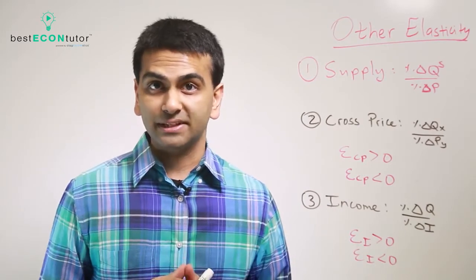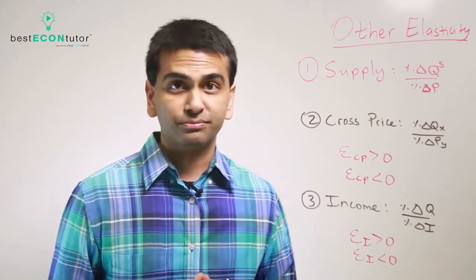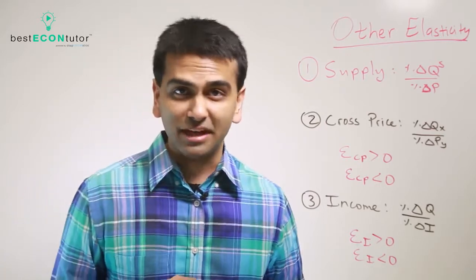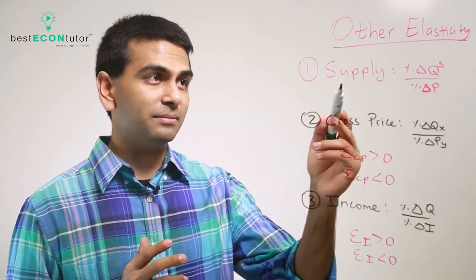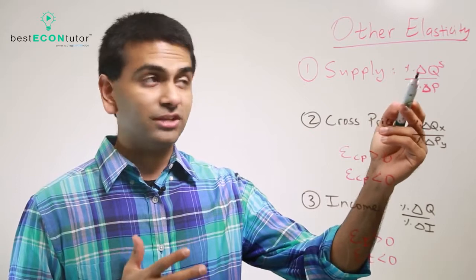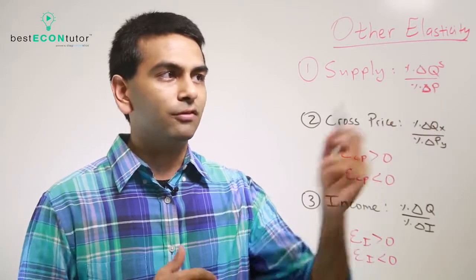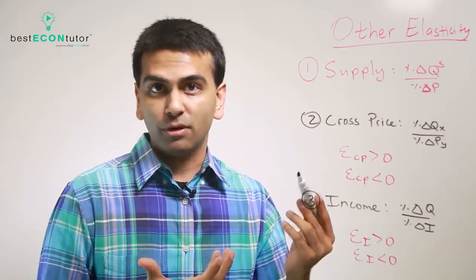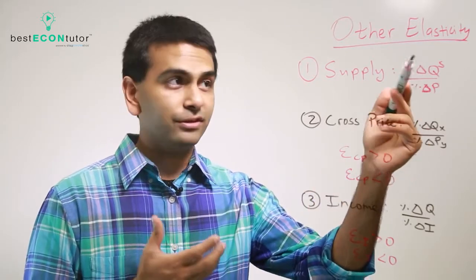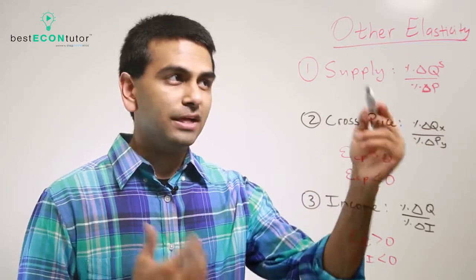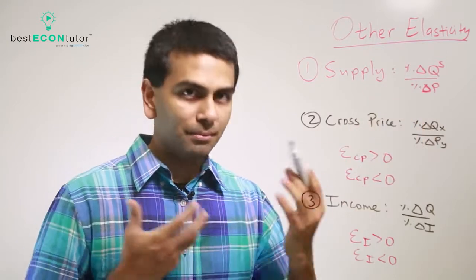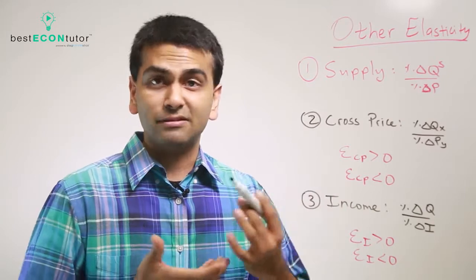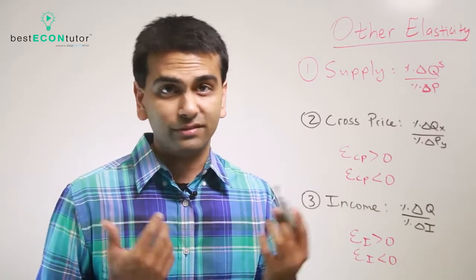Now let's look at some other types of elasticities. Elasticity of supply is calculated the exact same way as elasticity of demand — it's the percent change in quantity supplied over percent change in price. You can apply the midpoint formula where it's difference over average for quantity and for price. Notice this is always going to be positive, so you don't even need absolute values, because the supply curve slopes upwards.